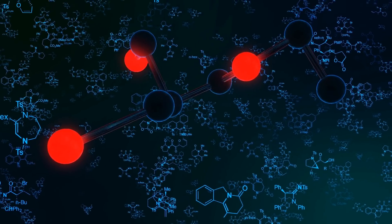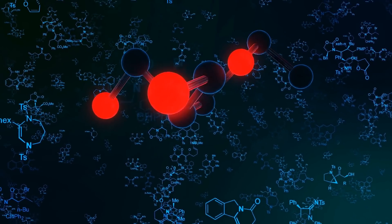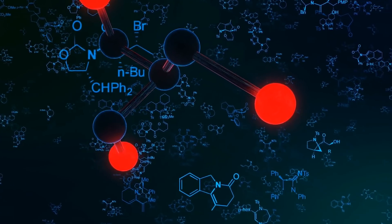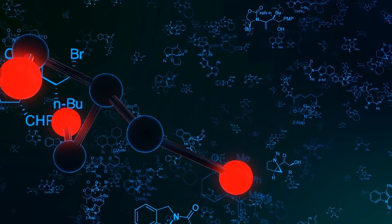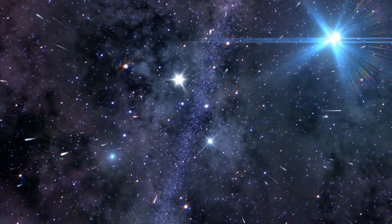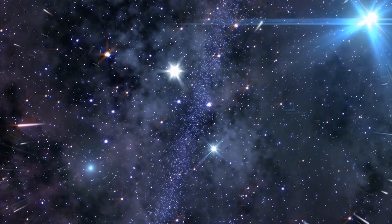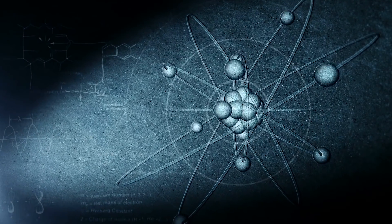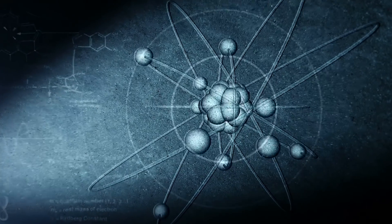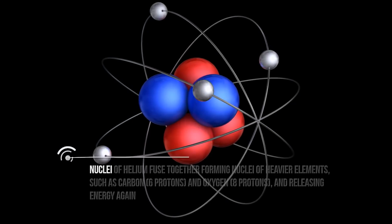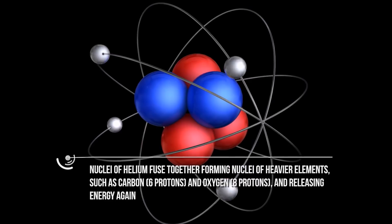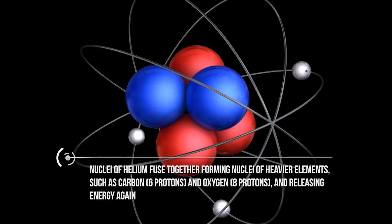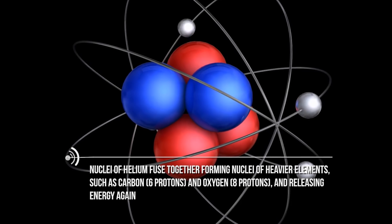With this nuclear fusion process, helium nuclei are produced. This continues for billions of years, until the core of the star runs out of hydrogen. The star can then change type of fuel and start burning helium instead. When the conditions of temperature and pressure become right, helium fusion occurs. Nuclei of helium fuse together, forming nuclei of heavier elements such as carbon (6 protons) and oxygen (8 protons), releasing energy again.